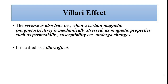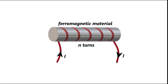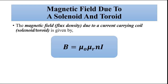Generally, the magnetostrictive transducer has a solenoid or a toroid, which is a ferromagnetic magnetostrictive material with a number of turns of wire wound over it, and a current is passed through it via a voltage source. The magnetic flux density due to any current-carrying coil — for a solenoid or toroid — is given by B = μ₀ μᵣ n I, where μ₀ is absolute permeability, μᵣ is relative permeability, n is the number of turns, and I is the current flowing through it.